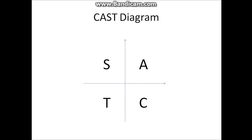I'll touch on that later in the next episode, because right now I want to talk about the CAST diagram. C-A-S-T. A means all the trigonometric functions in this quadrant are positive. For S, only the sine functions in this quadrant are positive. For T, only the tangent functions are positive. And over here, only the cosine functions are positive.